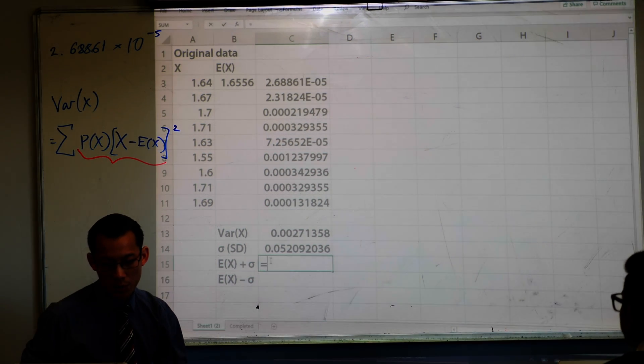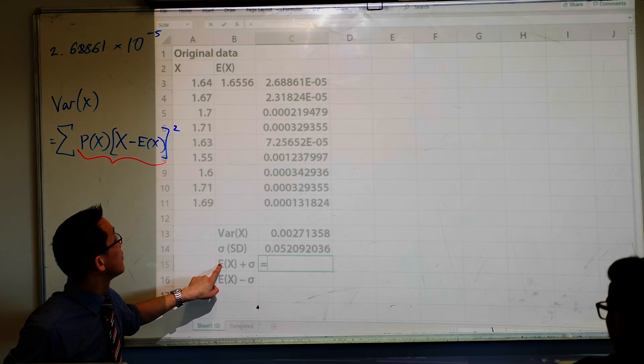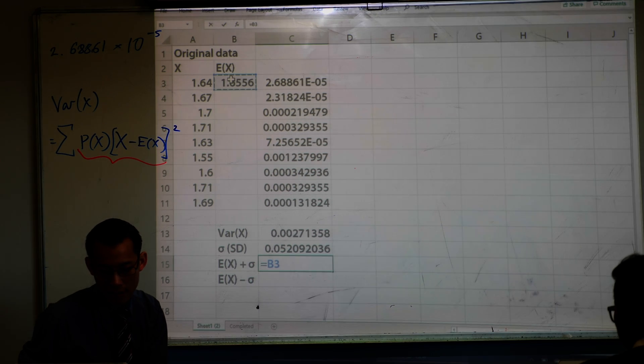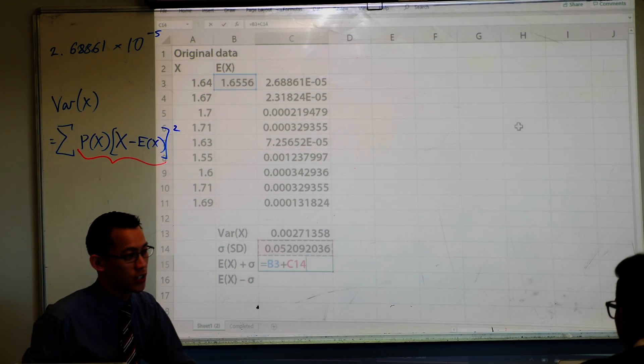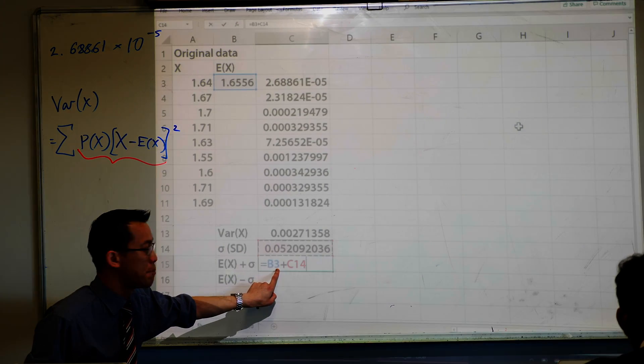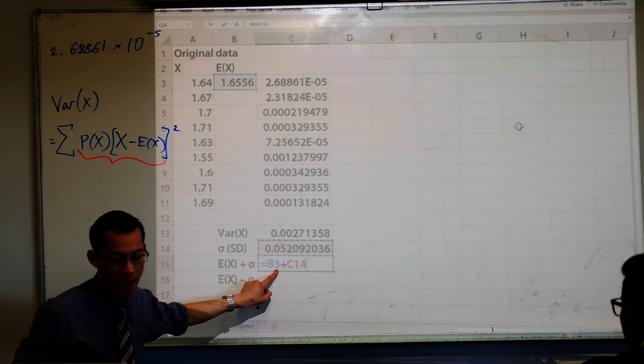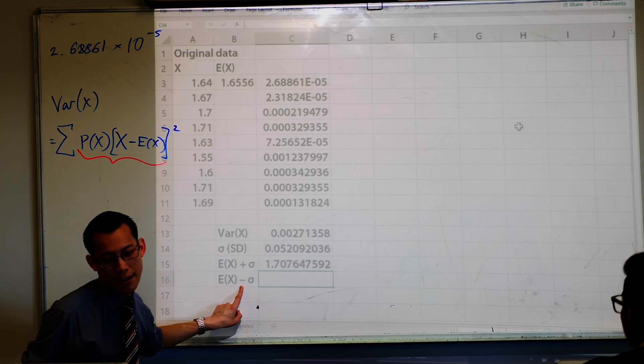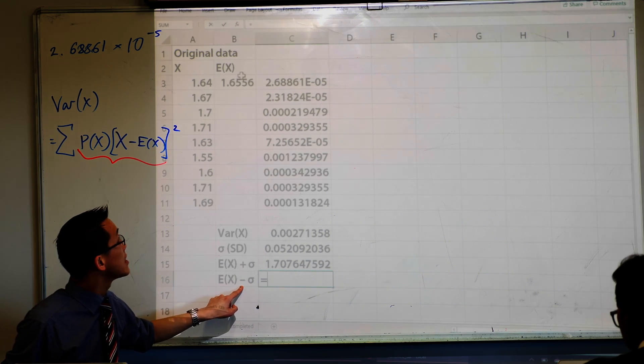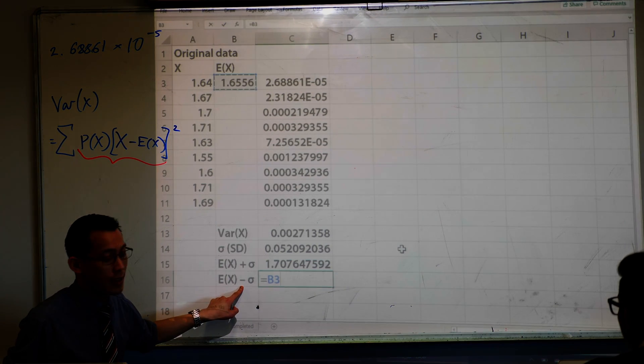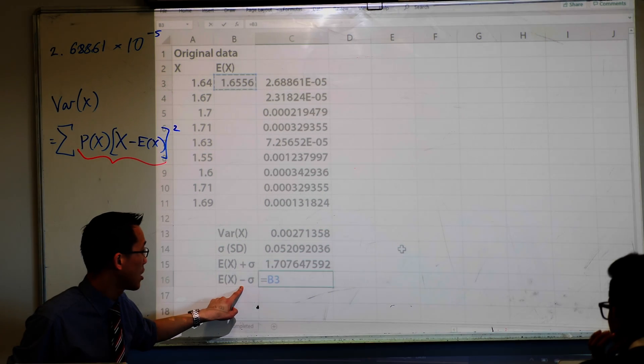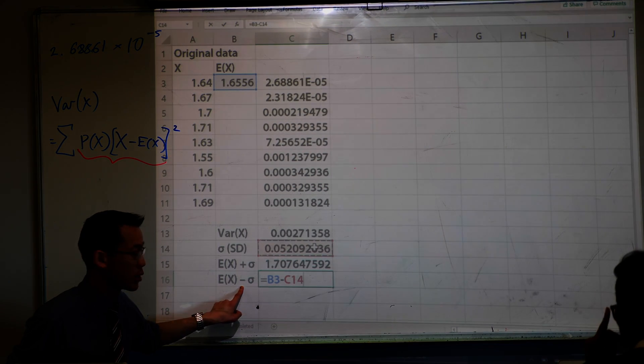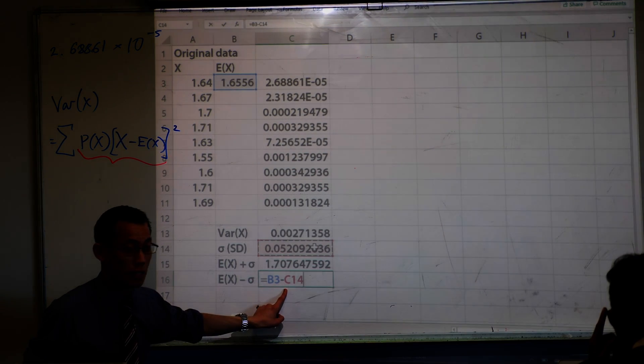Here's how we're going to do it. Equals, I want to start with my expected value, which is this number up the top here, and then I want to add my standard deviation. So I just click on the appropriate cells. I've got B3 plus C14. If I hit enter, it gives me this value, and then I want to do the same thing, but instead of adding, I'm going to subtract. So I type equals again, start with the expected value, which is up the top here, and instead of adding my standard deviation, I'm going to subtract my standard deviation. So I've got B3 minus C14.